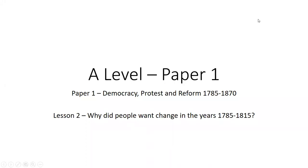This is lesson two in paper one of Edexcel and we're covering today why do people want change in the year 1785 to 1815. Last lesson we started looking at how people voted in Britain, and as time went on people began to demand change as Britain was changing as a country, which caused all sorts of threats to the government. The government were very elitist — at the top you had the aristocratic wealthy people who earned the vote because of their holding of land. This became a problem as England grew and people demanded more democratic say in politics.